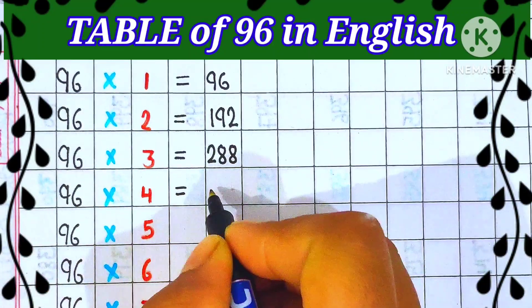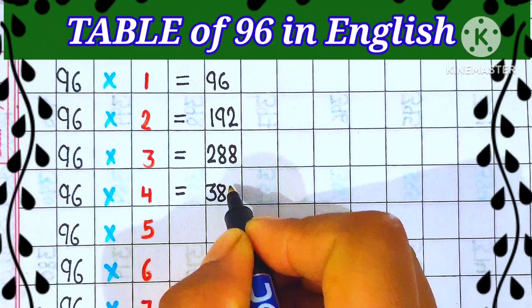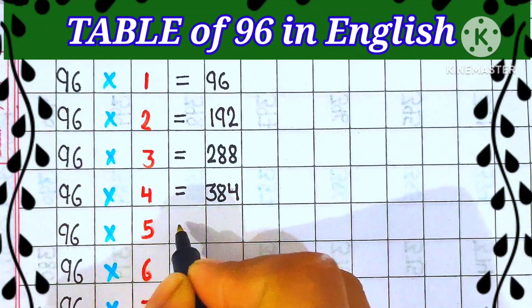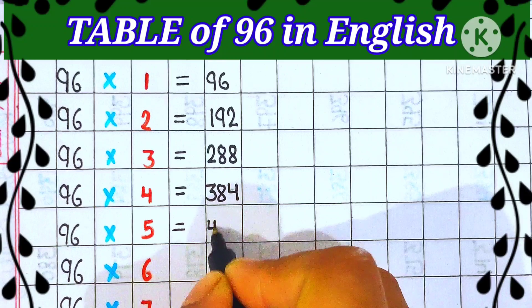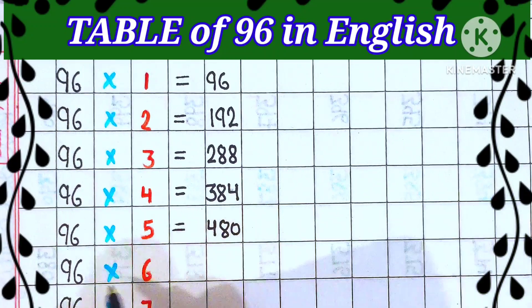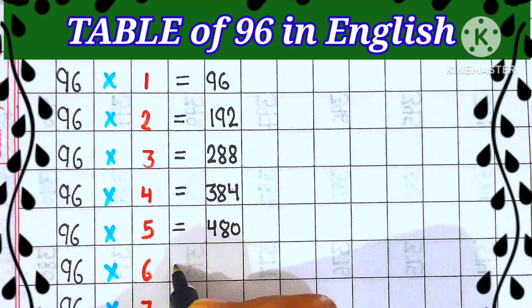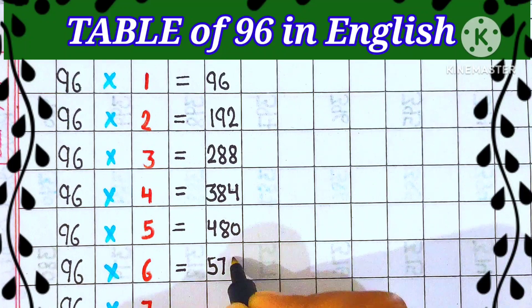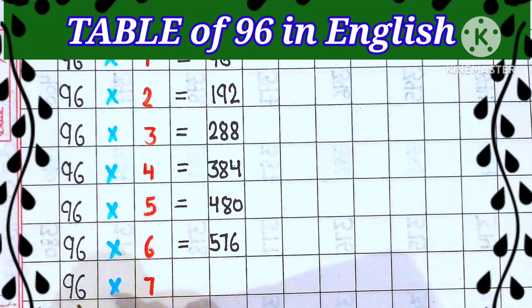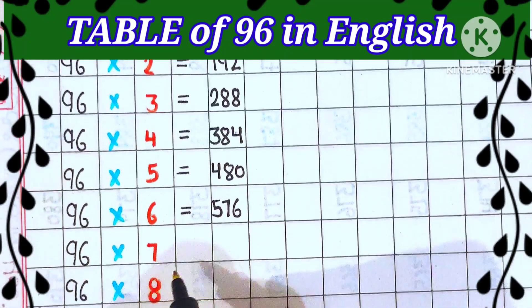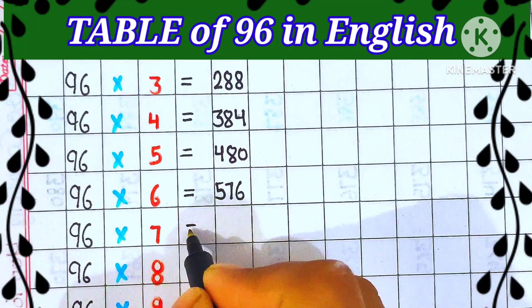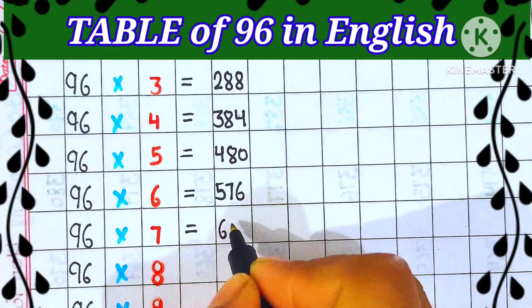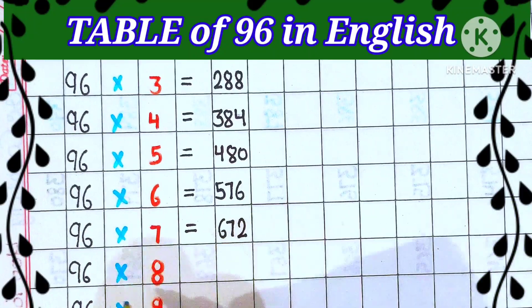96 fours are 384, 96 fives are 480, 96 sixes are 576, 96 sevens are 672.